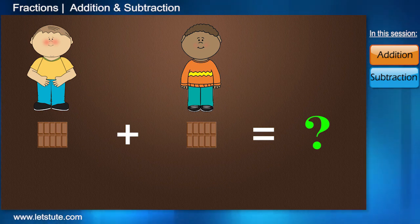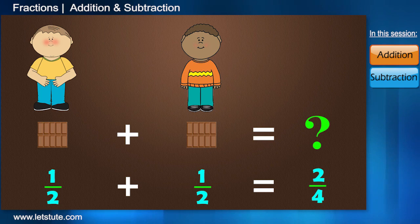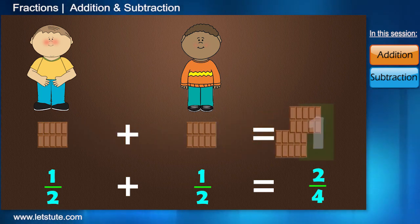So, here, we will add 1 by 2 plus 1 by 2 which gives us 2 by 4. But practically, when we see, it looks like that the answer should be 1, right?